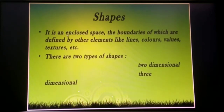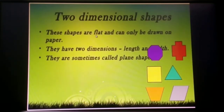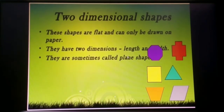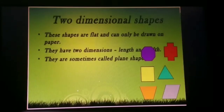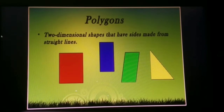Now, shapes. A shape is an enclosed space, the boundaries of which are defined by elements like lines, colors, values, textures, etc. There are two types of shapes: two-dimensional and three-dimensional. Two-dimensional shapes are flat and can only be drawn on paper. They have two dimensions: length and width. They are sometimes called plane shapes.